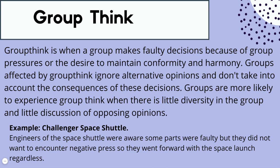Group think often happens in groups with little diversity — where many people already have the same opinion — such as groups that are similar in race, age, gender, or socioeconomic status, or groups where there's very little discussion of opposing opinions. It's about maintaining conformity and cohesion without seeing the consequences of those decisions.